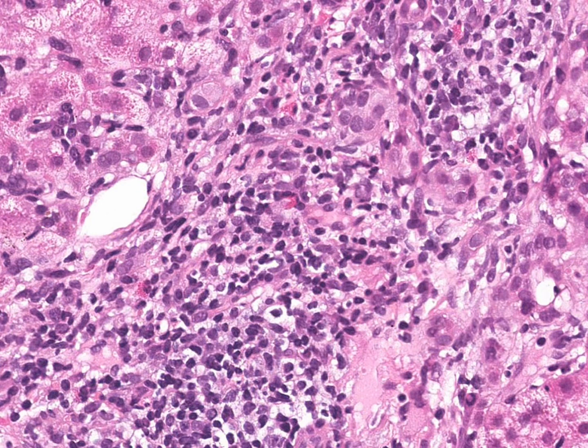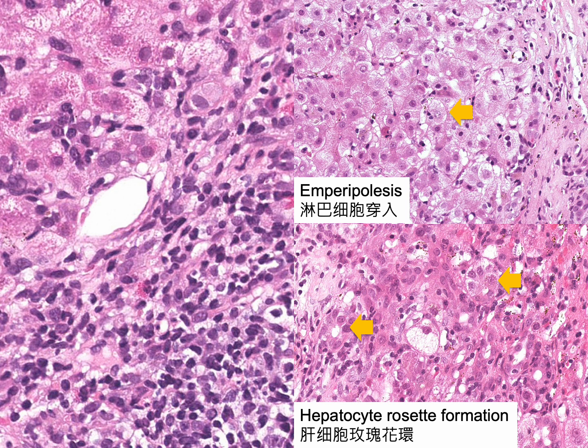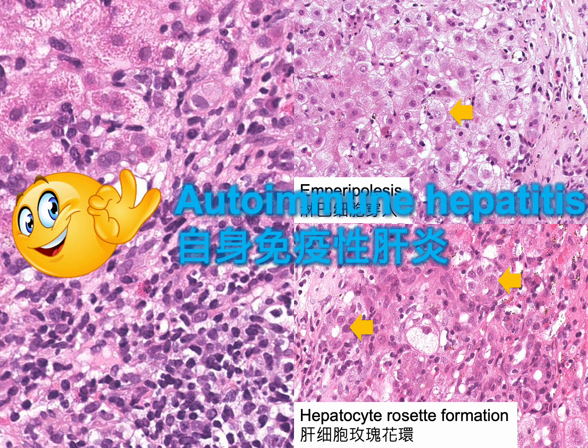This example also demonstrates lymphocyte predominant portal inflammation as well as interface hepatitis. If emperipolesis and hepatocyte rosette formation are revealed, the overall histological picture is typical for autoimmune hepatitis. Certainly, we have to correlate with serum immunoglobulin and autoantibodies.